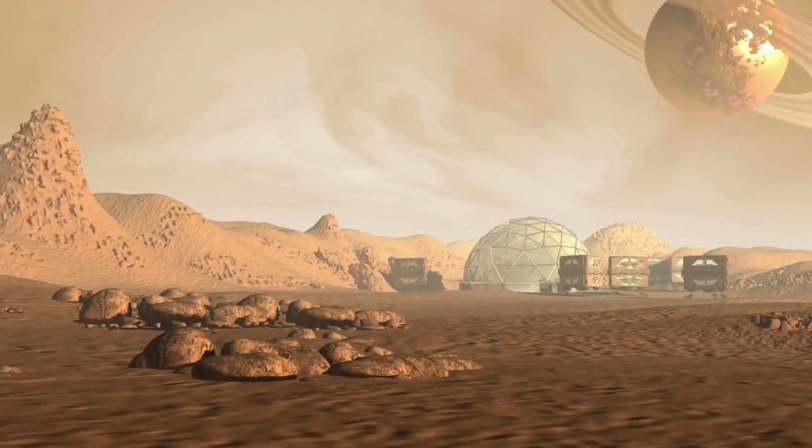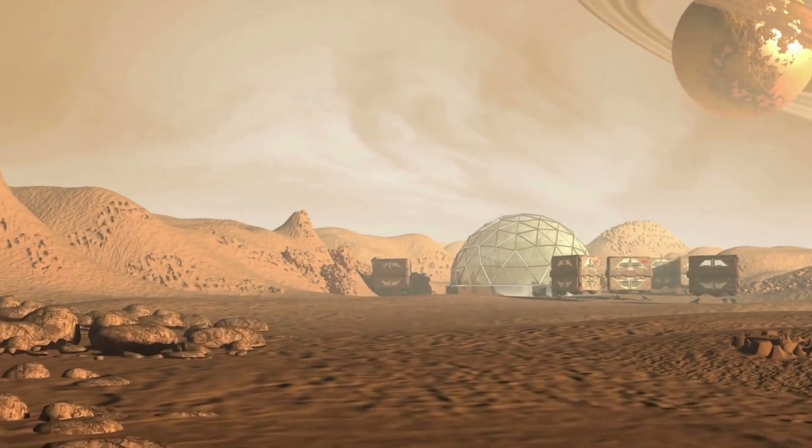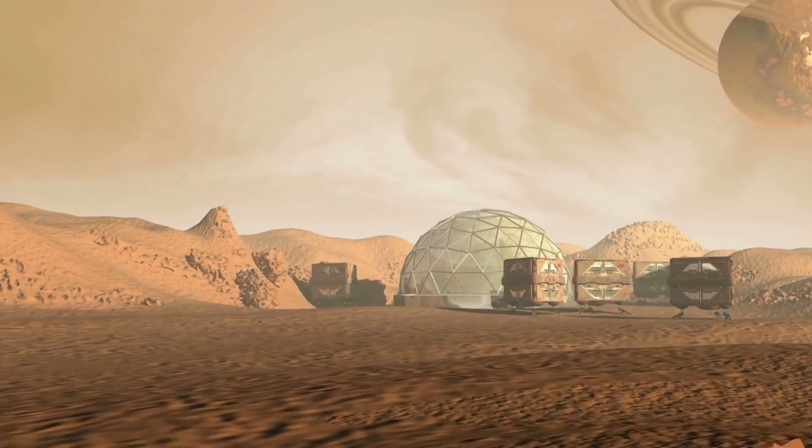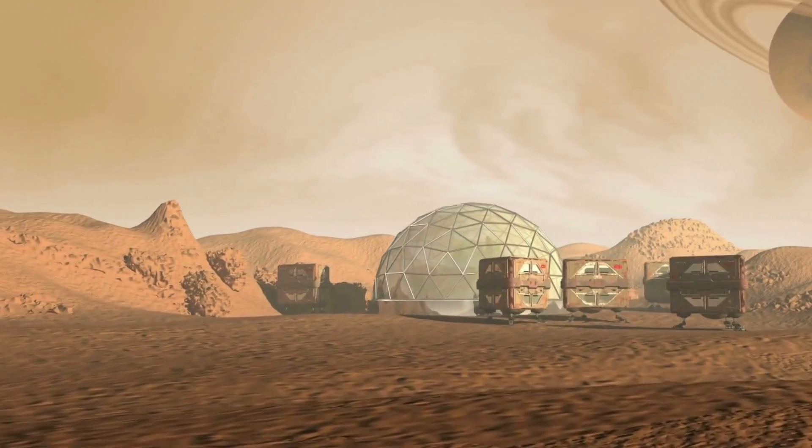What are these rings made of? Primarily, they consist of countless small particles. These range in size from micrometers to meters, each orbiting Saturn like a tiny moon. The composition of these particles is fascinating as well. They're mostly water-ice, with some dust and other chemical compounds mixed in. This gives the rings their brilliant, reflective quality.